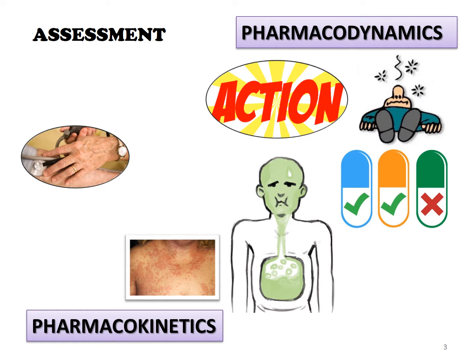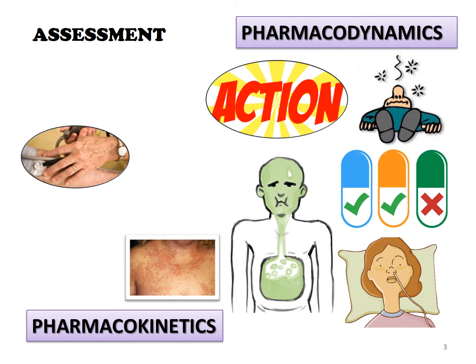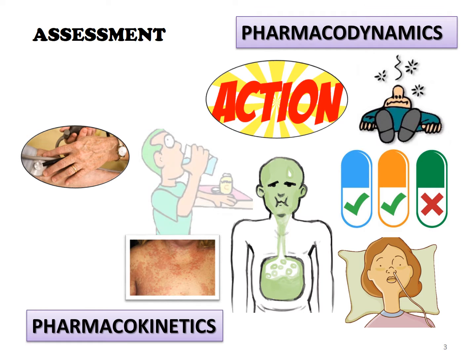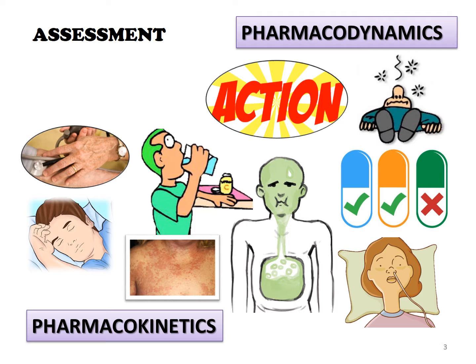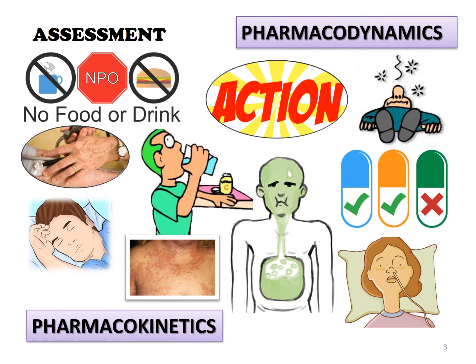The nurse determines if contraindications to oral administration are present, such as the presence of GI suction, the inability to swallow, altered level of consciousness, or if the patient is NPO — that is, nil by mouth. The nurse analyzes all this information to determine if it is safe to proceed with oral medication administration of that specific medication to that specific patient at that specific time.